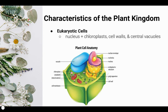In addition to chloroplasts, plant cells also have two additional structures. They have cell walls, which are made of cellulose and provide structure, and they have a massive central vacuole that stores water and nutrients.